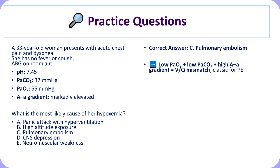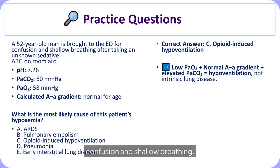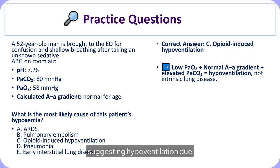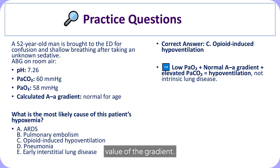A 52-year-old man with confusion and shallow breathing has an ABG showing a normal AA gradient, suggesting hypoventilation due to opioid use rather than intrinsic lung disease. This emphasizes the diagnostic value of the gradient in distinguishing the underlying cause of hypoxemia.